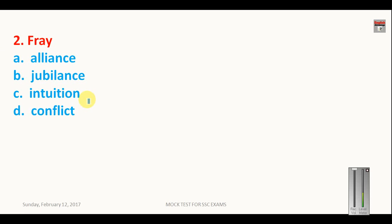Now what is the meaning of fray? F-R-A-Y. The synonym for this word fray is conflict because fray means conflict or kind of dispute. Intuition means your inner voice. Jubilance means a kind of happiness and alliance means cooperation. So here your answer will be D, that is conflict.